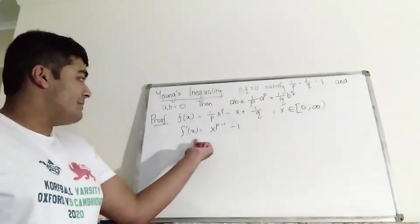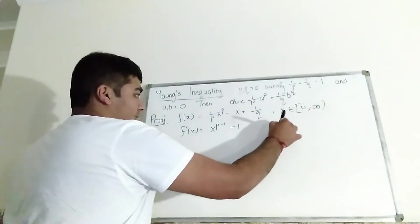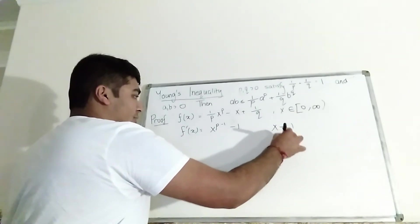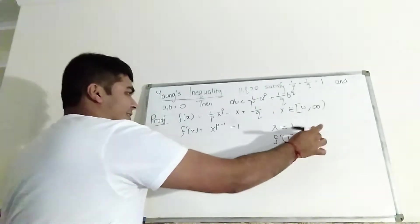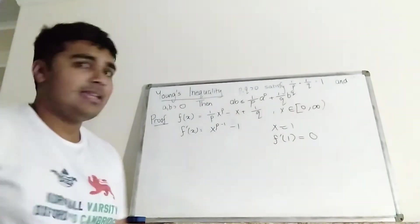Okay, so then that means that the only root to this thing here is x equals 1. So in other words, f prime of 1 equals 0, and f prime of x everywhere else is not 0.